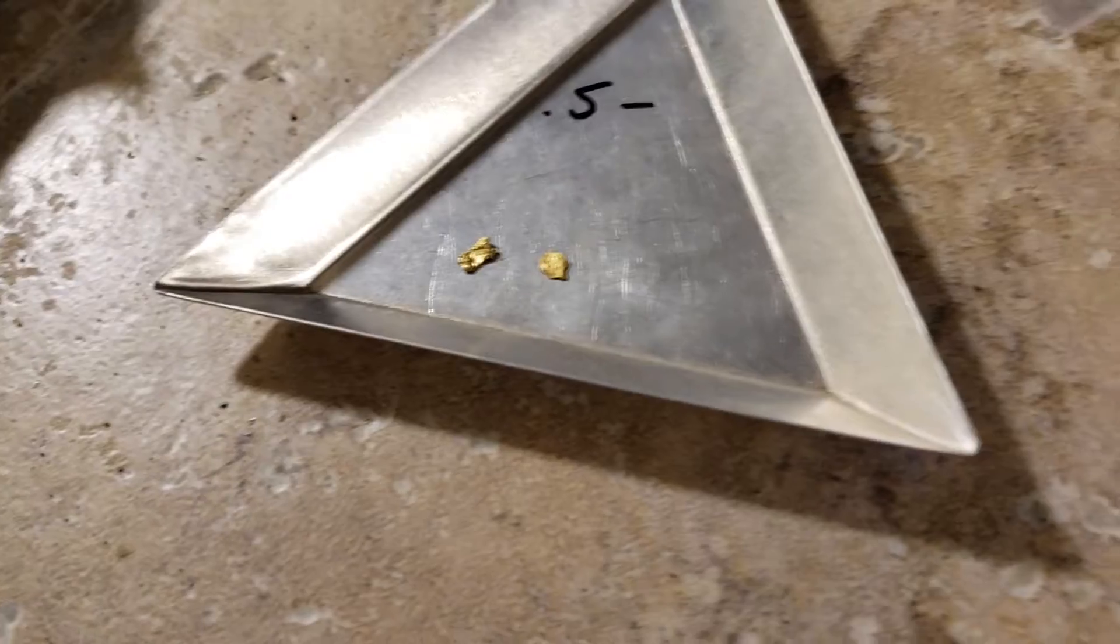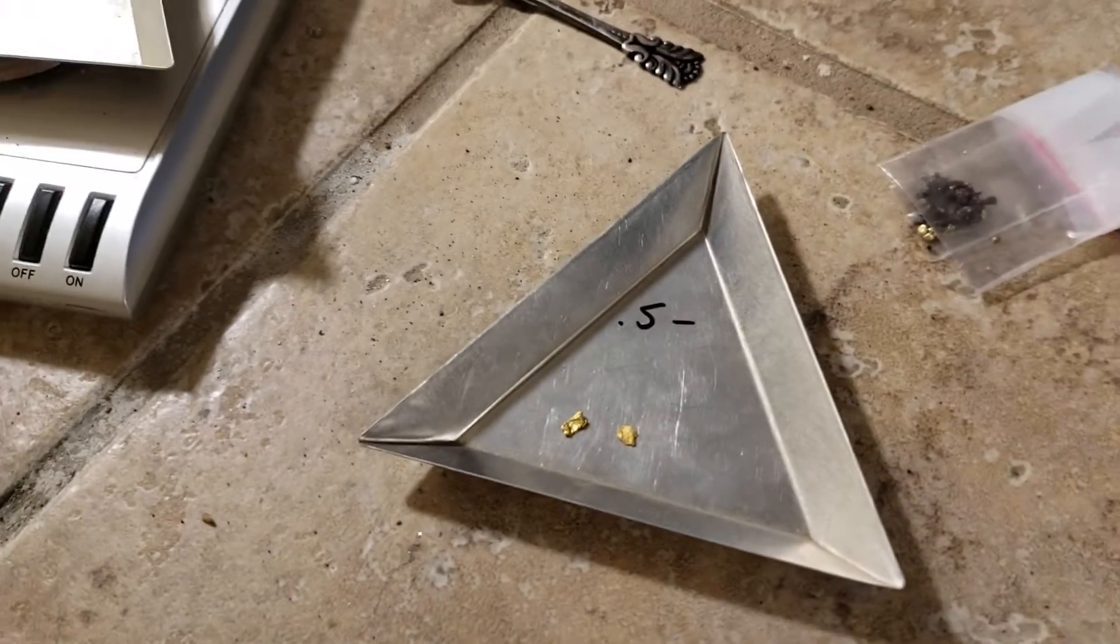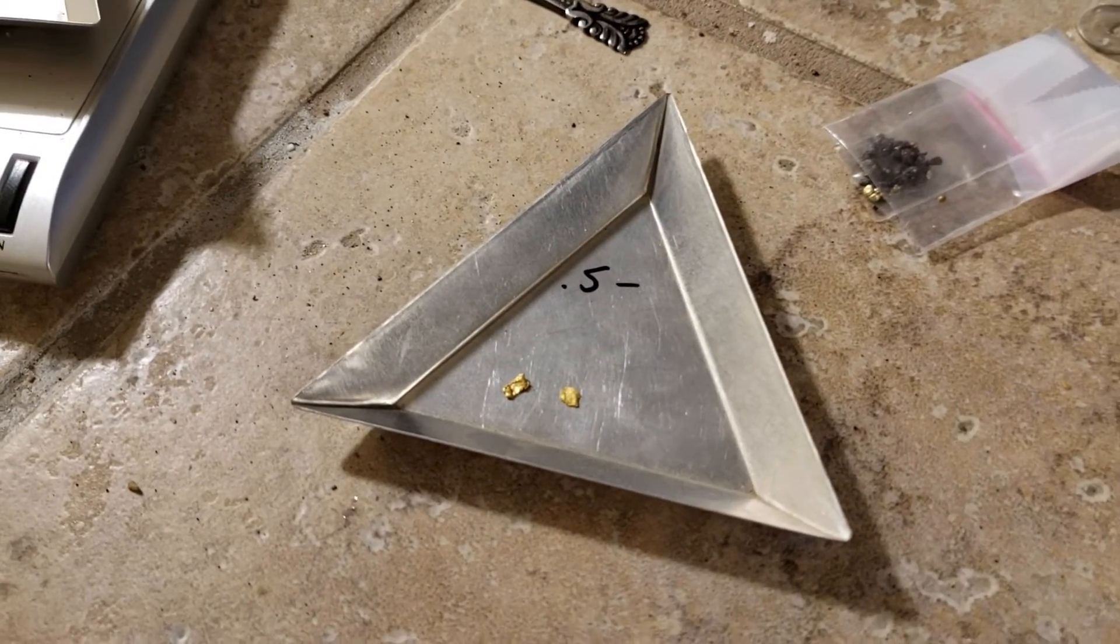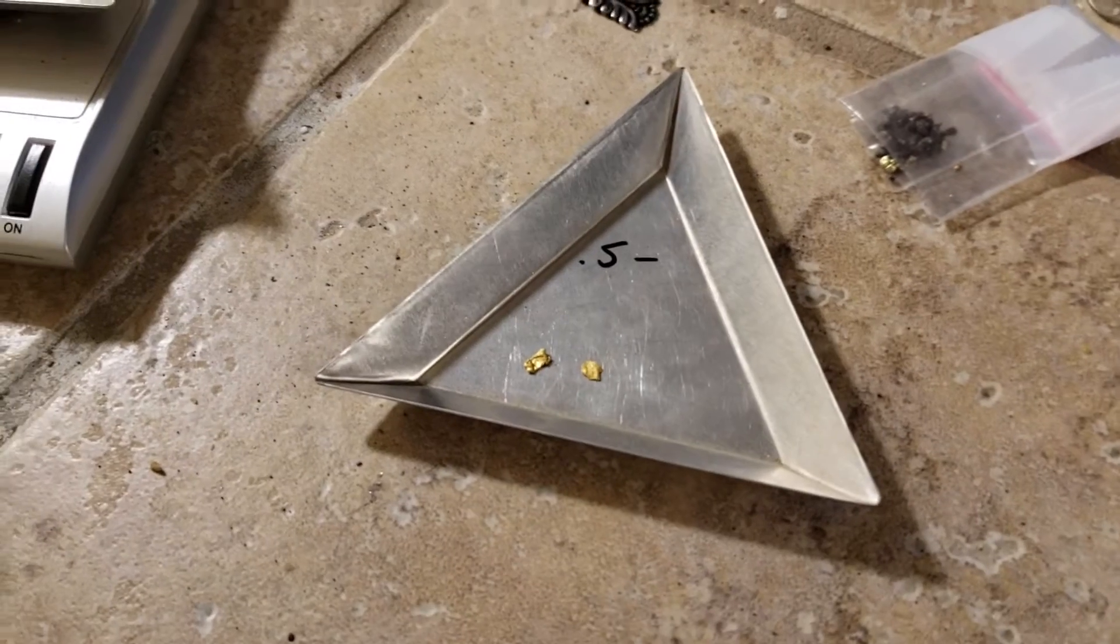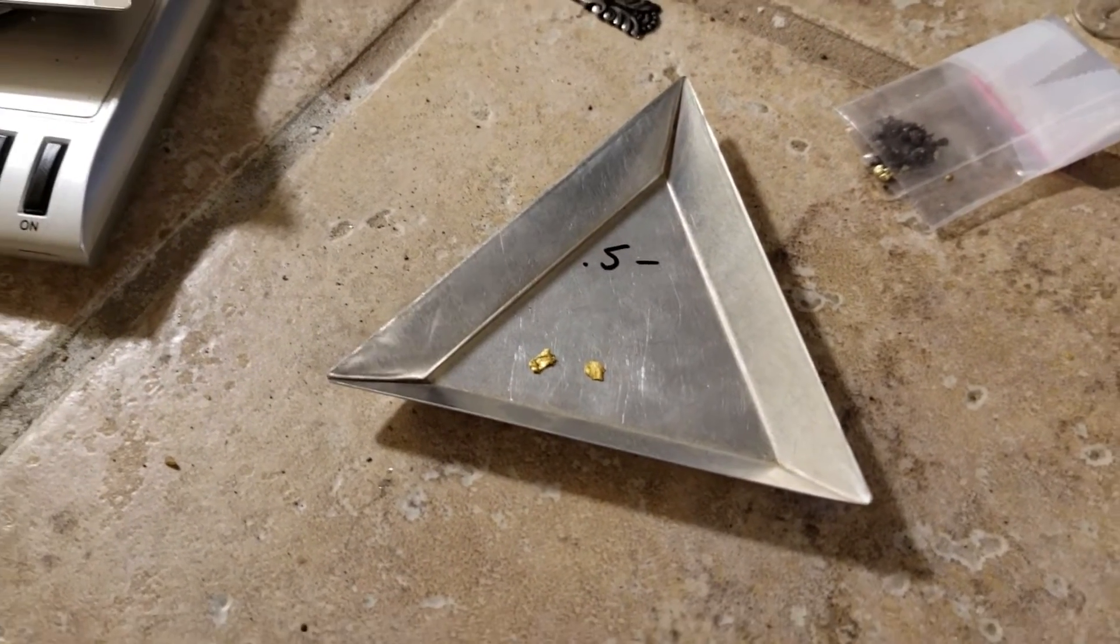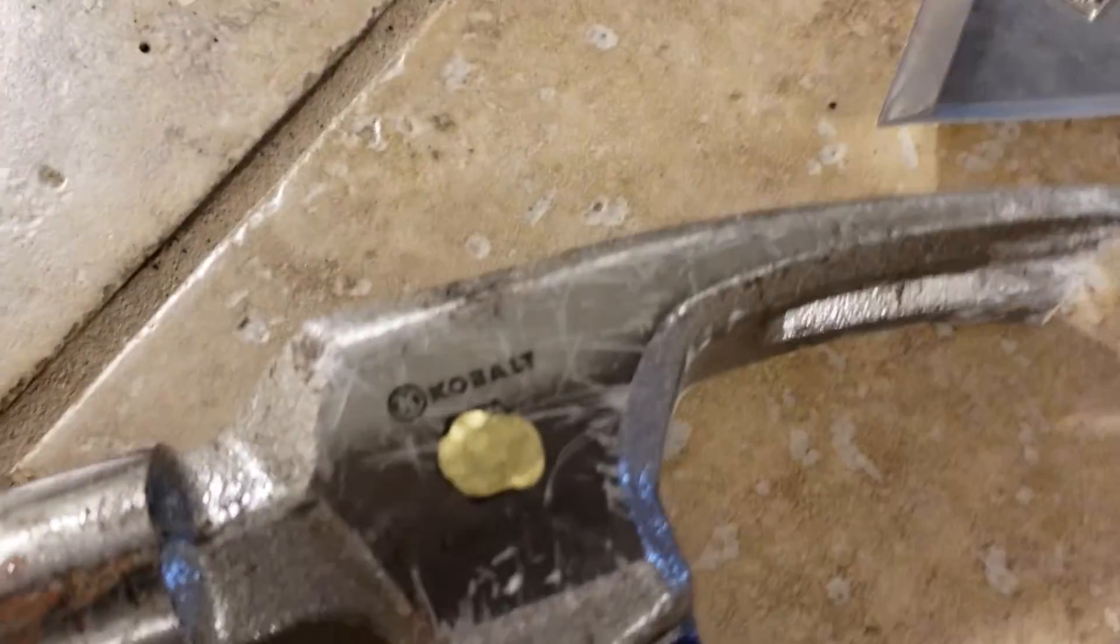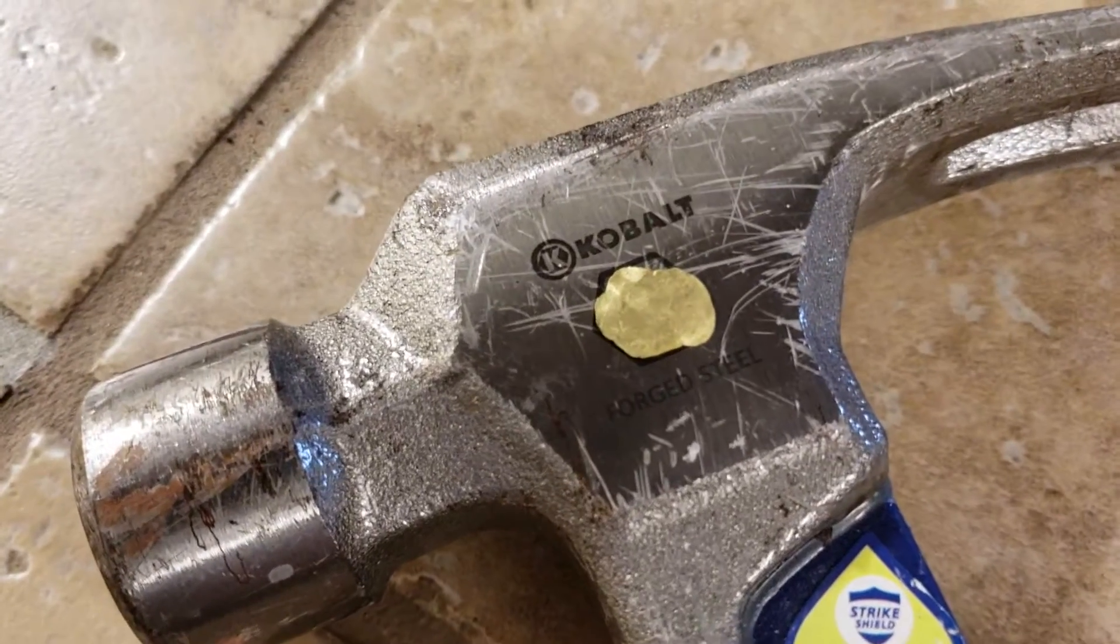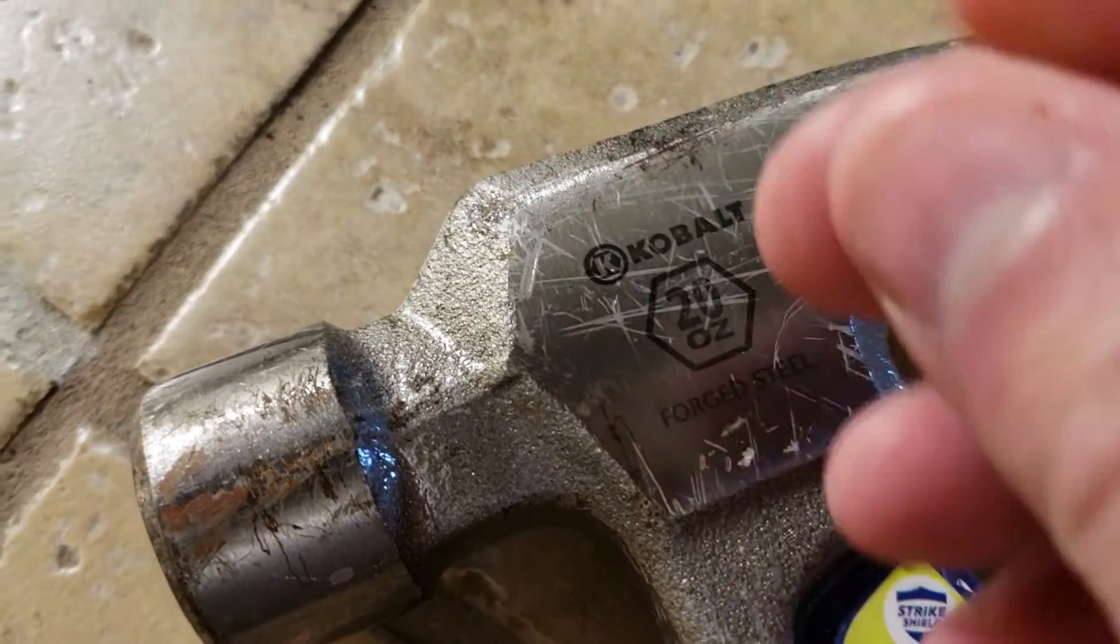But, this video is more about what I did because I was bored the other day and I was curious and curiosity got the best of me. But I had a gold nugget that was about a quarter of a gram and I wanted to know what would happen if I hit it with a hammer. So, I hit it with a hammer a whole bunch of times.